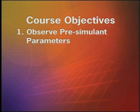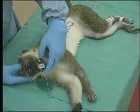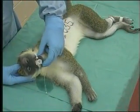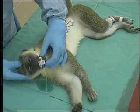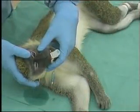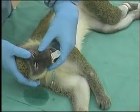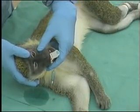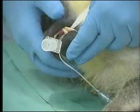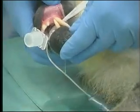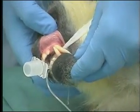The first objective is to observe pre-simulant parameters of the non-human primate. To accomplish this, you will perform a physical exam. Start with the head and work your way down. Observe the eyes and note the size of the pupils. Look at the mouth, the teeth, and the gums, and note the amount of salivation present.